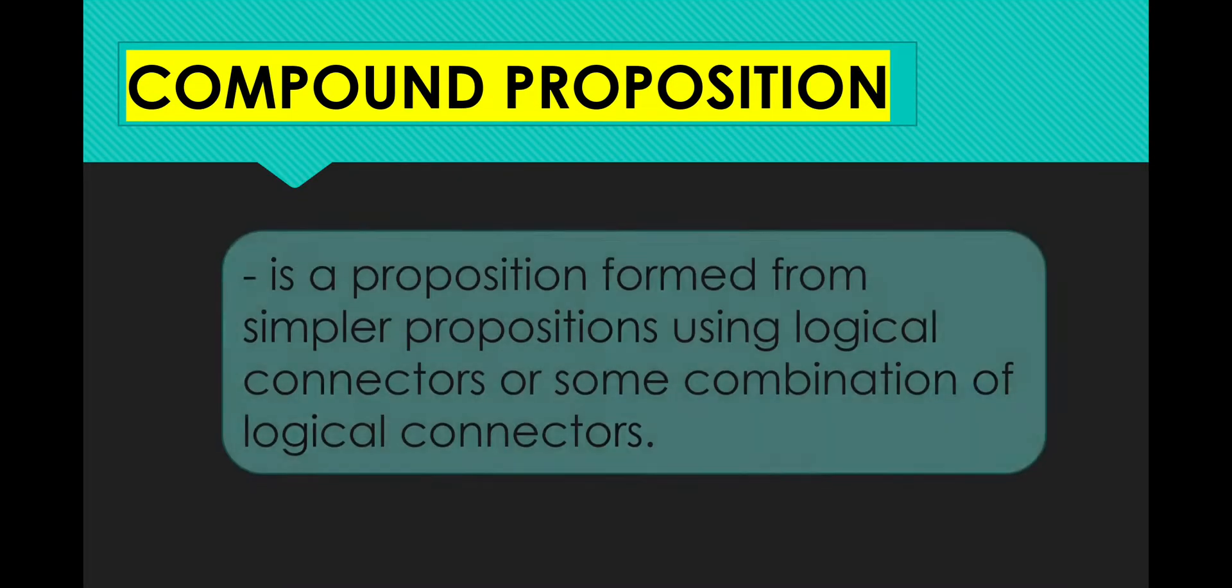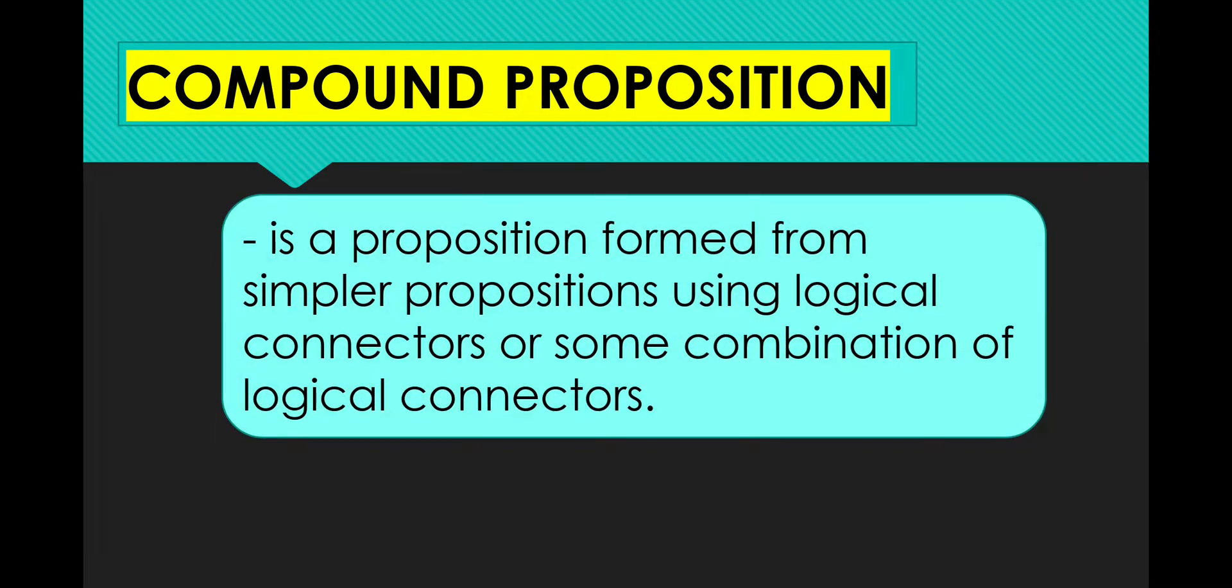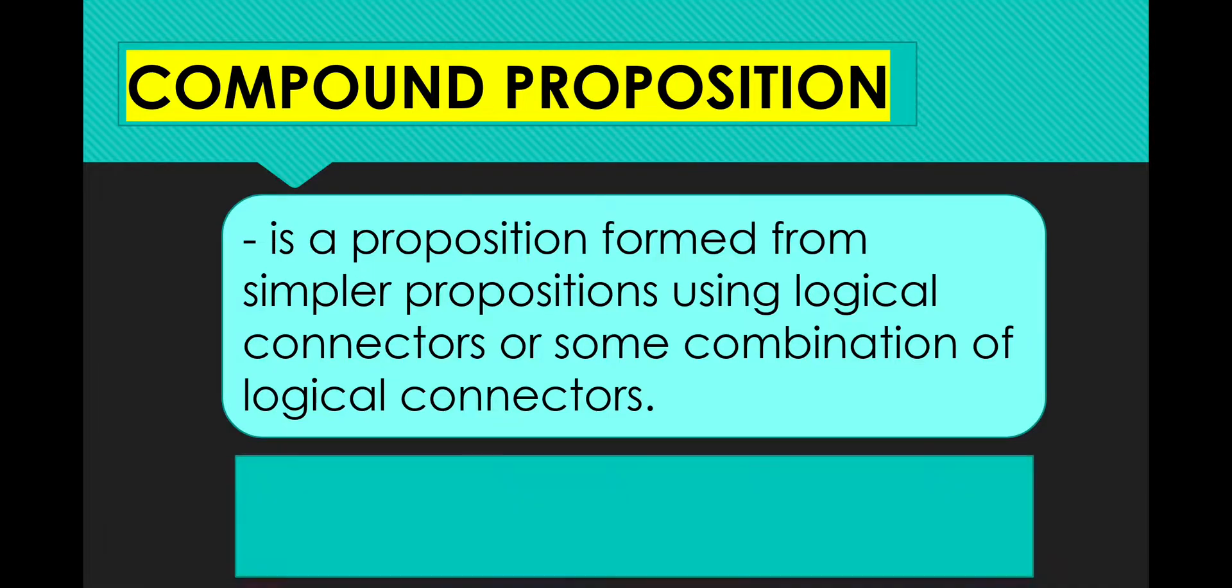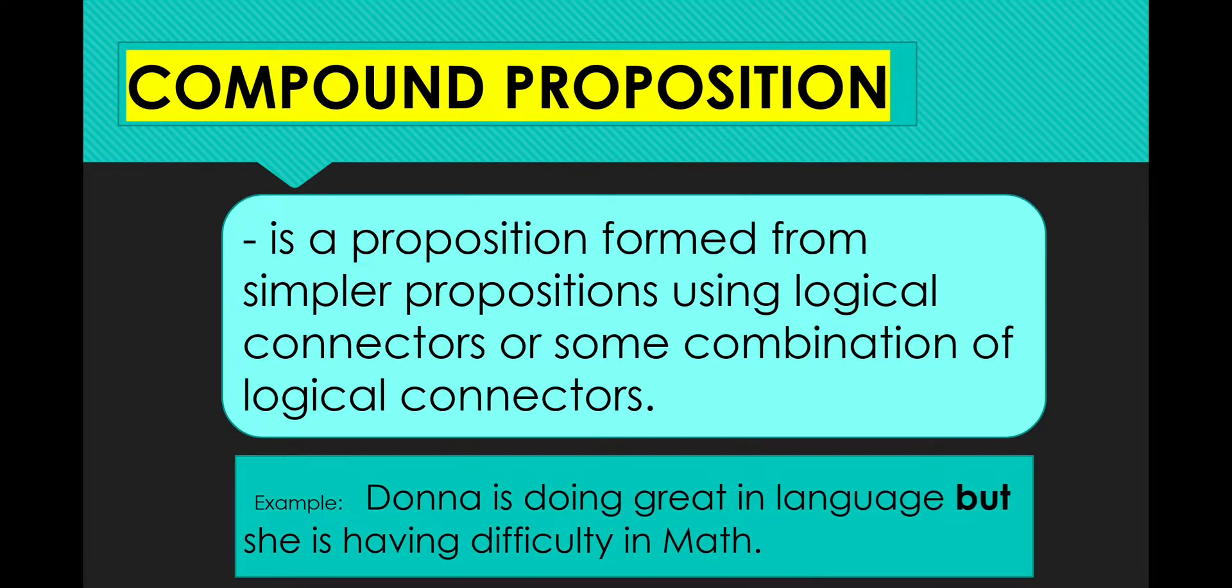The next one is compound proposition. It is a proposition formed from simple propositions using logical connectors or some combination of logical connectors. For example, Donna is doing great in language but she is having difficulty in math. The word but here connects two simple propositions. The first proposition is Donna is doing great in language, and the second proposition is she is having difficulty in mathematics. Therefore, the word but is the connector.